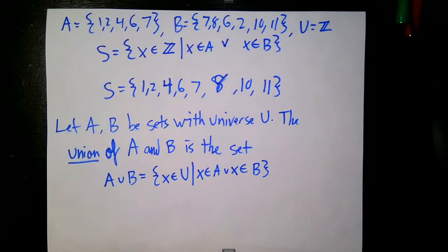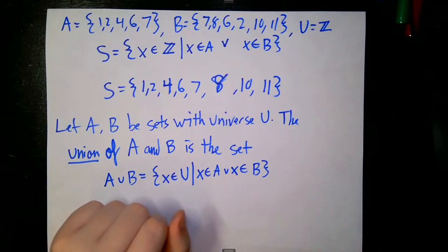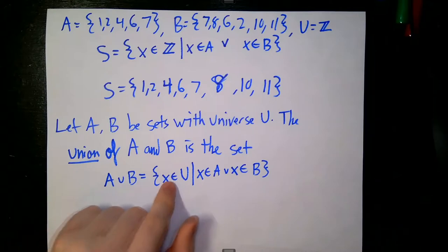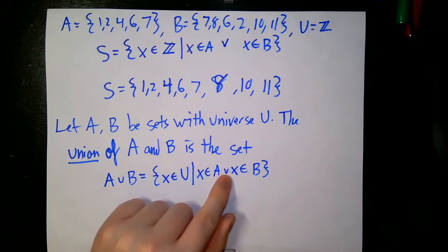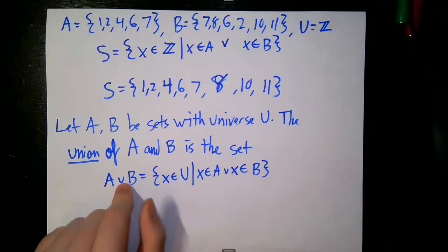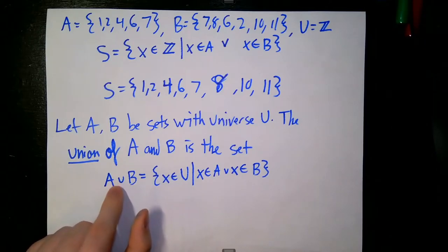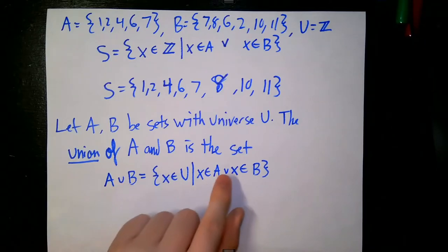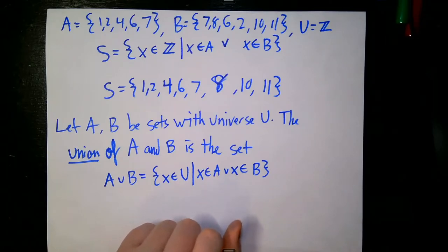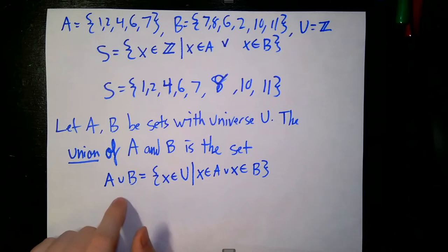The union symbol ∪ is curved, and the disjunction symbol ∨ is pointed, both facing the same way — an easy way to keep track of which is which.